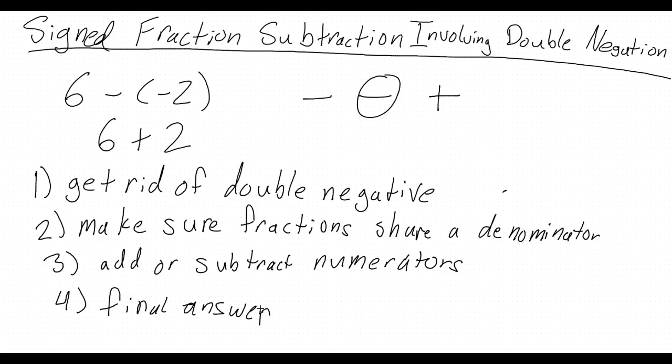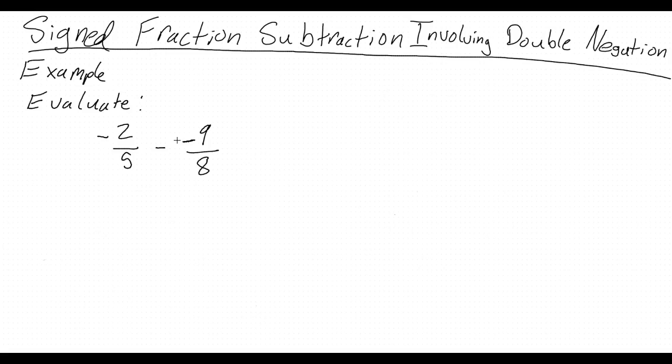Now, let's try an example. So this example is evaluate negative 2 fifths minus negative 9 eighths. Where do I start? Well, first, we need to deal with the double negative. Since we're subtracting a negative, this is the same thing as adding.